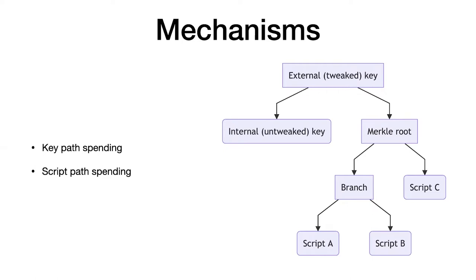At the very high level, the things that taproot supports are primarily a key path spend — where you don't reveal the fact that you have a tree of other scripts from which you can spend your output — and a script path spend, where you can spend from one of the bottom-level leaves without creating a signature for that spending mechanism. The question is: how exactly do you create the byte sequence to do those things?